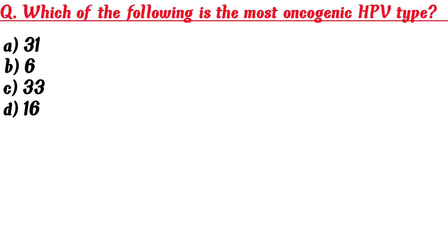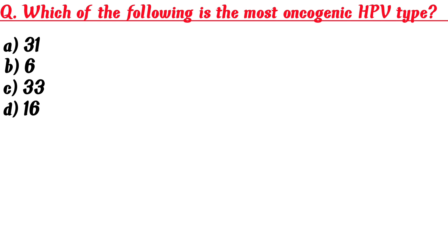Which of the following is the most oncogenic HPV type? A. 31, B. 6, C. 33, D. 16. Answer is 16.